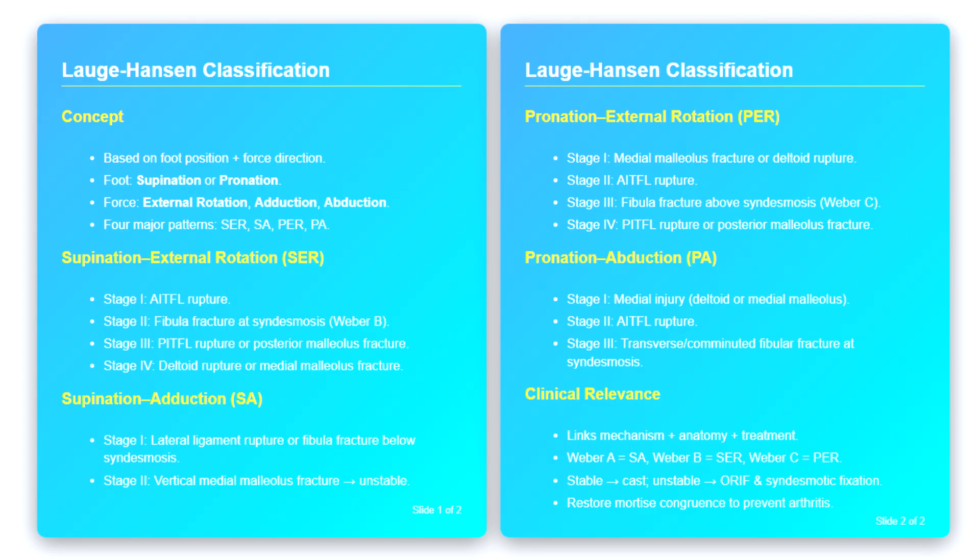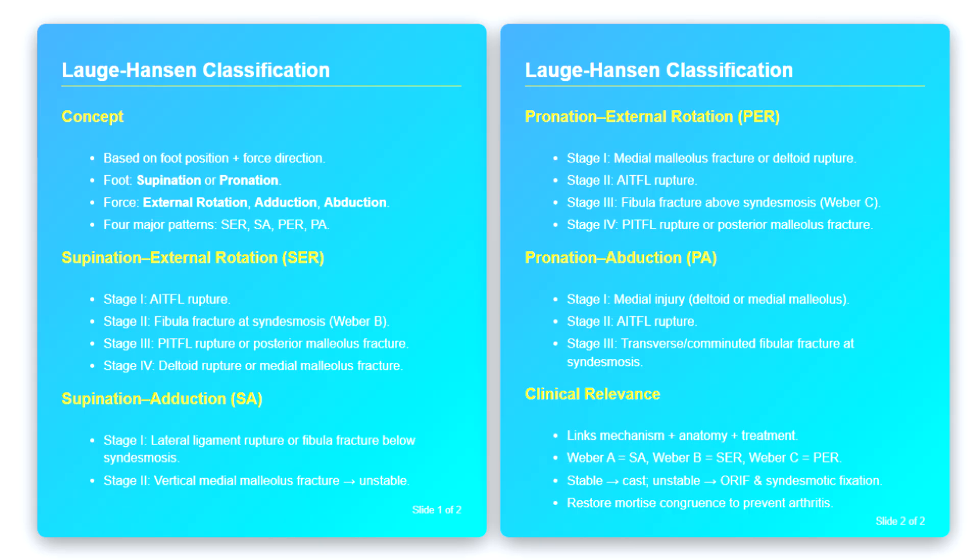Supination adduction, SA. The second pattern is supination adduction. Here, the foot is in supination, and an adduction force acts medially. The sequence has two stages. In stage one, there is rupture of the lateral collateral ligaments, or more commonly a transverse fracture of the lateral malleolus at or below the level of the syndesmosis. This is sometimes referred to as a Weber A fracture.